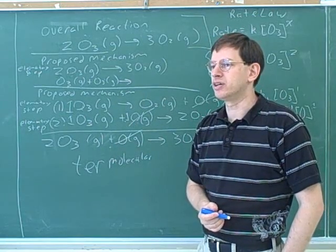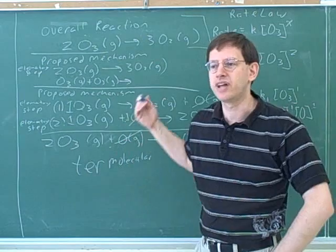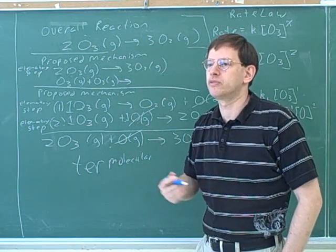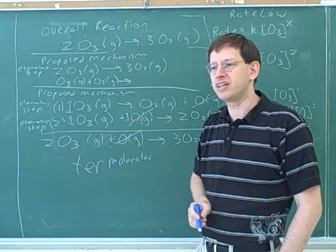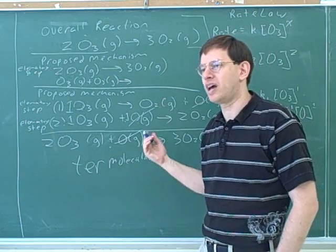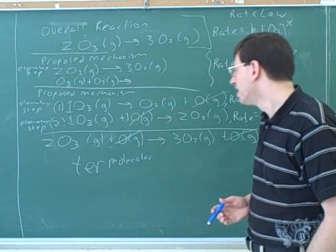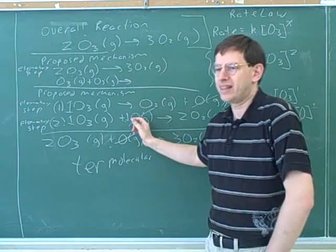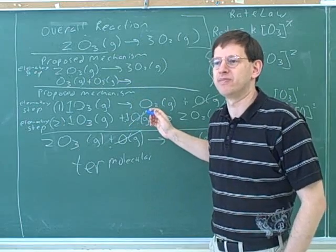An intermediate is something that is produced in one step, but then completely used up in another step. A starting material is something that you start with, and then is used up. A product is something that you don't start with, and is created. An intermediate is something that is produced in one step, and used up in a subsequent step. So generally, if you can cancel that thing in your mechanism, that's a sign that it's an intermediate.